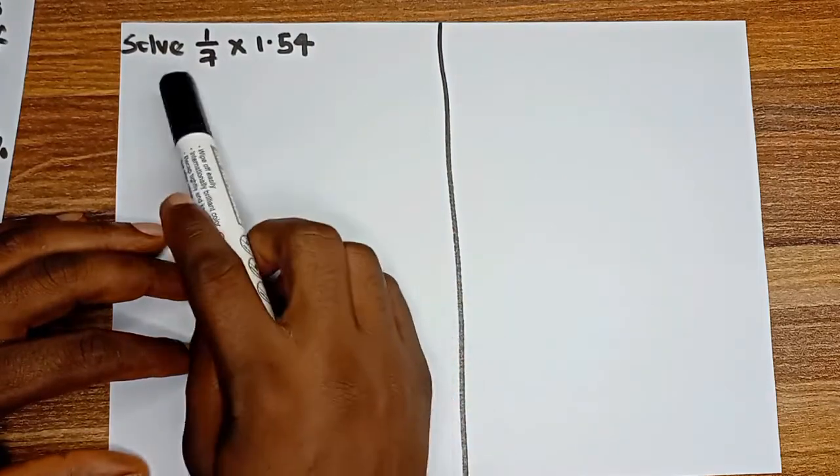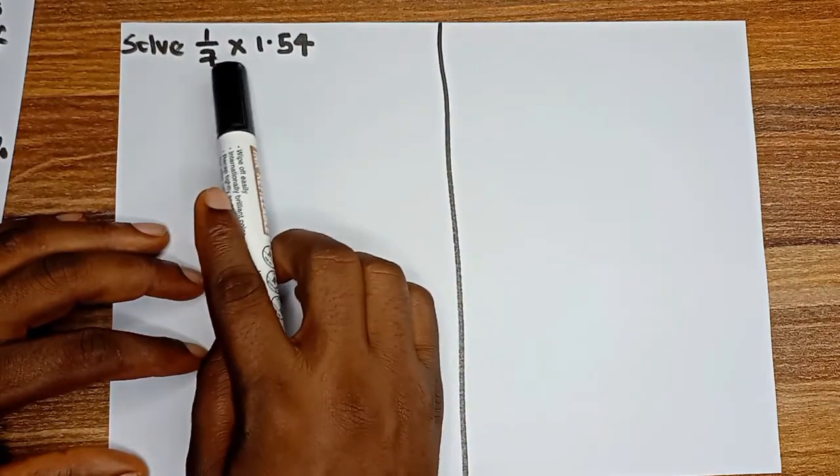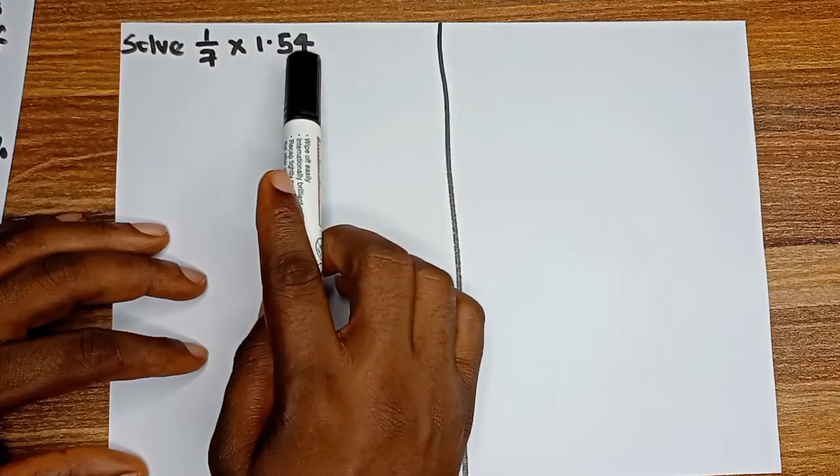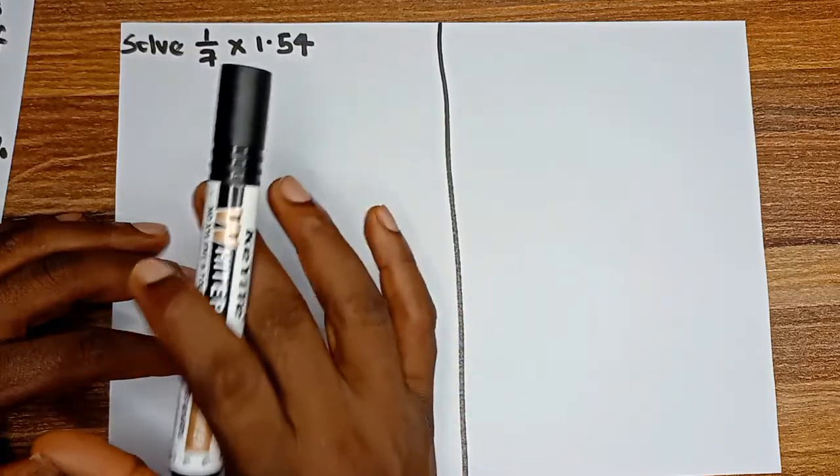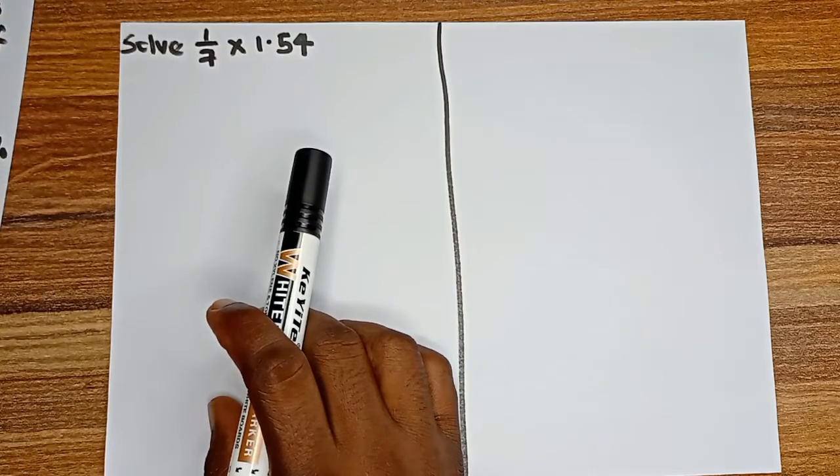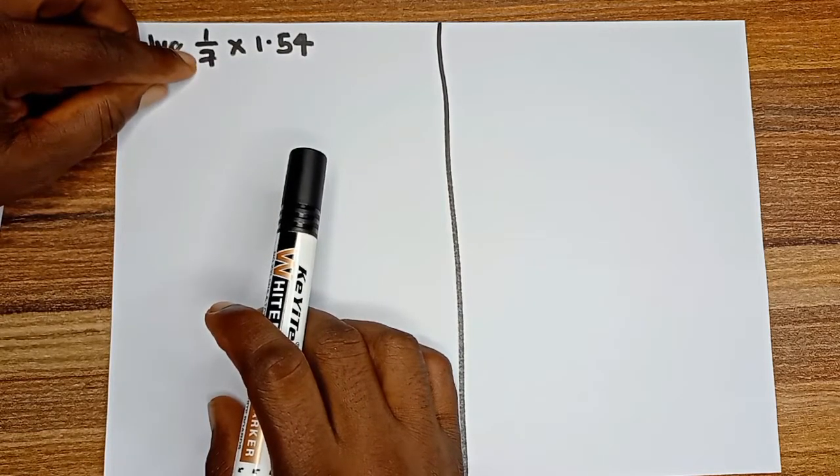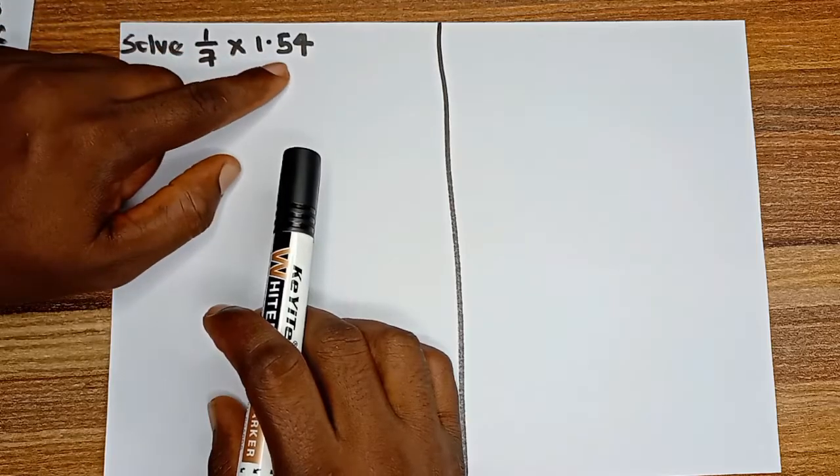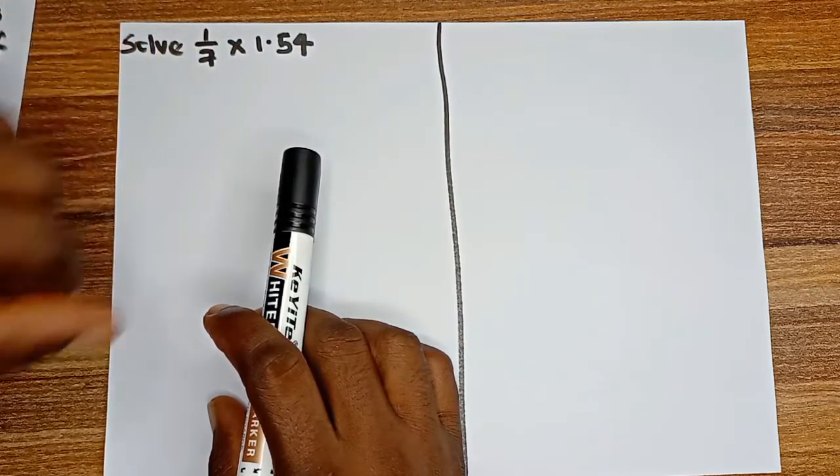Hi guys, in this video we are expected to solve 1/7 multiplied by 1.54. Now this is a very simple question but there is a little bit of an issue here. The issue is this first value is a fraction and the second value is a decimal.